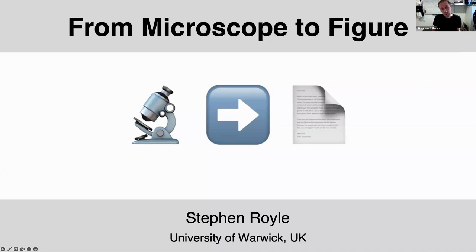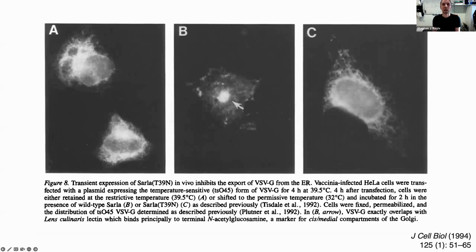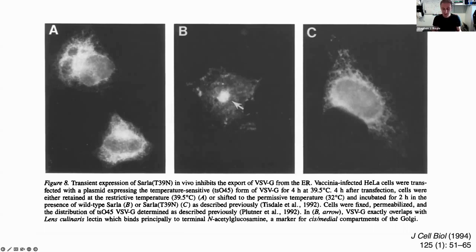Going from microscope to figure used to be easier in some ways than it is today. I'm going to start with a historical picture — a figure from a JCB paper in the mid 90s. This is a classic paper, cited thousands of times. It was certainly a lot easier to have a figure back in those days in terms of the amount of data, though getting that data into a figure was quite difficult — authors had to take photographs onto film, get it developed, print it, assemble the figure as a physical thing, re-photograph it, and send it to the journal.